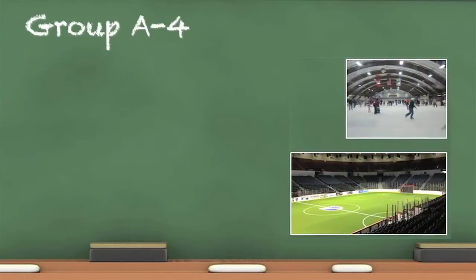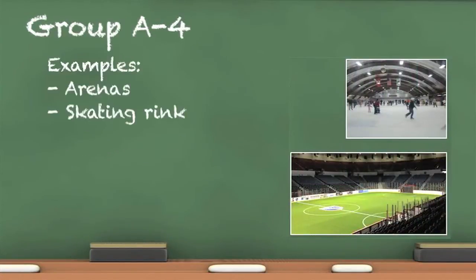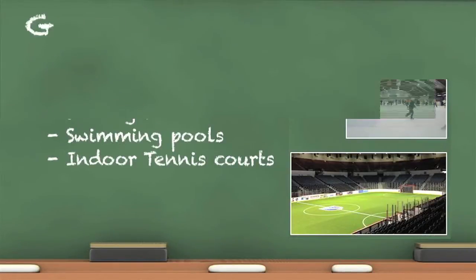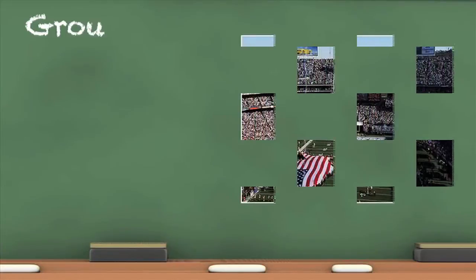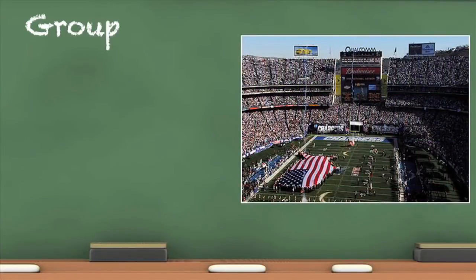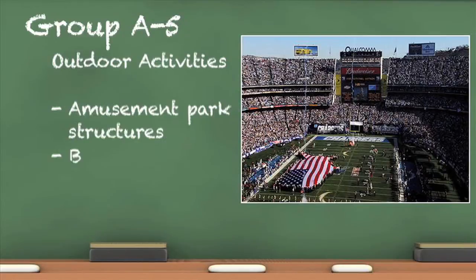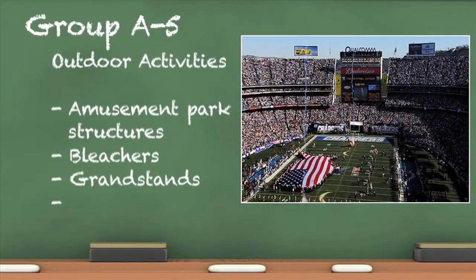Group A4 occupancies are designed for indoor sporting events and do have spectator seating. Group A5 occupancies are used for watching and/or participating in outdoor activities. Group A4 occupancies are inspected annually by the Fire Prevention Bureau's Special Events section.